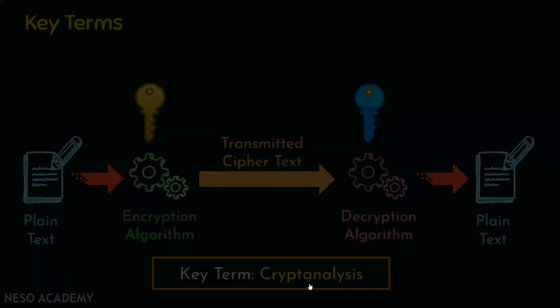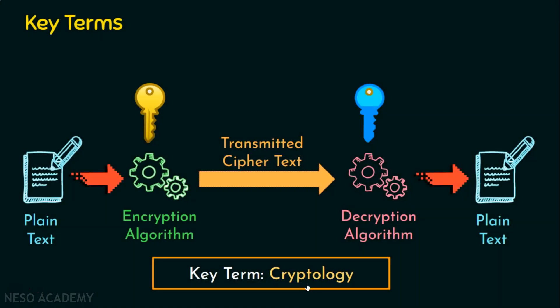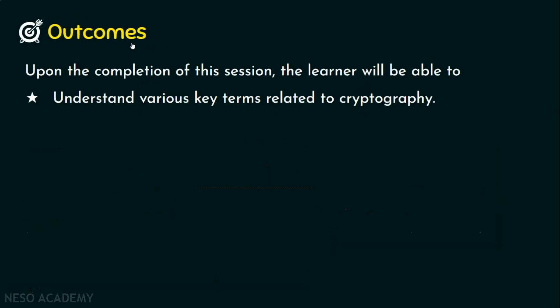The last key term is cryptology. Cryptology is the combination of cryptography and cryptanalysis. Cryptography deals with converting plaintext into ciphertext and back, while cryptanalysis is the malicious activity performed by an attacker. Cryptology deals with both. I hope you now understand the various key terms related to cryptography. Thank you for watching.